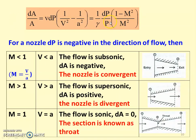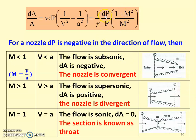Looking at this equation, for a nozzle dP is always negative since pressure decreases in the direction of flow. When Mach number M < 1, the flow is subsonic. Substituting, the right-hand side becomes negative, meaning dA is negative — the area is decreasing — so the nozzle is a convergent nozzle.